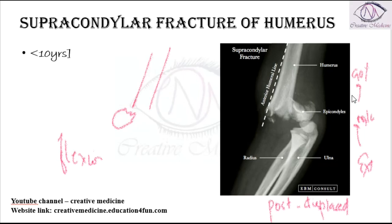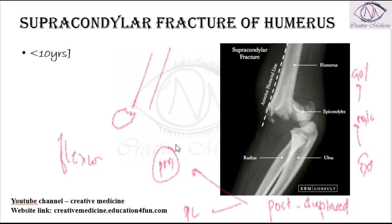Extension type of injury is again of two subtypes. One, we have posterior medial displacement. Second, we have posterior lateral displacement. Posterior medial displacement is the most common type of extension fracture injury.